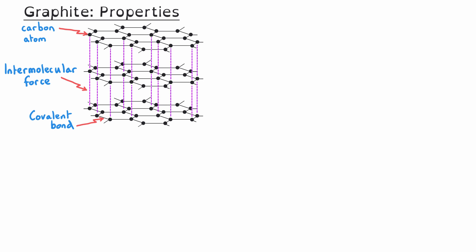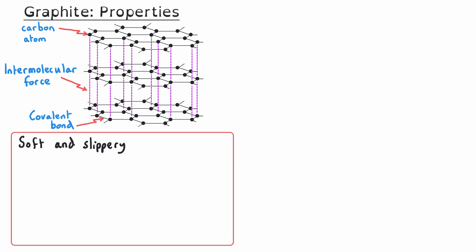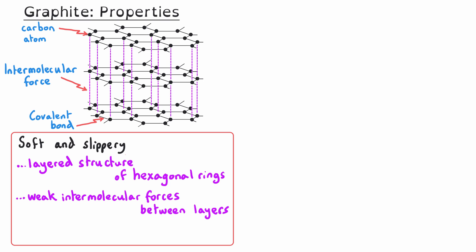The structure and bonding of graphite gives rise to three important properties. First, graphite is soft and slippery, which enables it to act as a lubricant and reduce friction. The reason is its layered structure of interlocking hexagonal rings — there are only weak intermolecular forces between the layers, meaning weak forces of attraction and no covalent bonding, so the layers can slide over each other and separate. This also makes graphite useful in pencils: when you use a pencil, you are literally rubbing off a layer of graphite onto the paper.